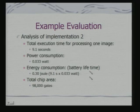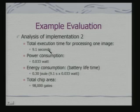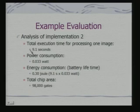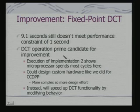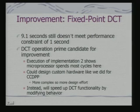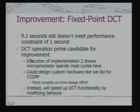Evaluating this architecture, total execution time for processing one image is 9.1 seconds, power consumption is 0.033 watts, energy consumption is 0.3 joules, and total chip area is a certain gate count. We are violating the time constraint, so this design is also not acceptable. The next option is to address the DCT — through profiling, the DCT operation takes the most time. DCT uses 260 floating-point operations per pixel transform, and the 8051 does not support floating-point calculations, requiring the compiler to generate integer-based emulation — estimated at over 10 million integer operations per 64×64 image.